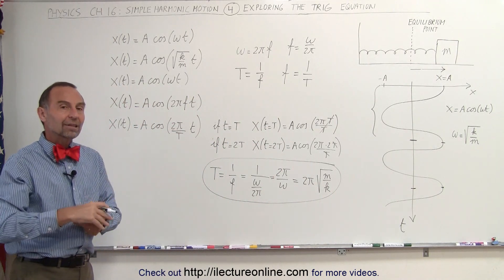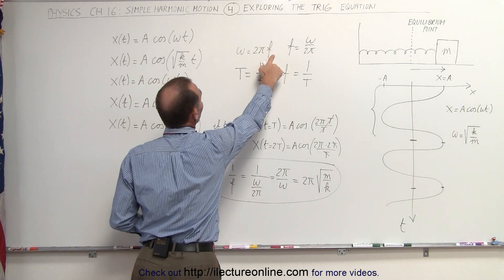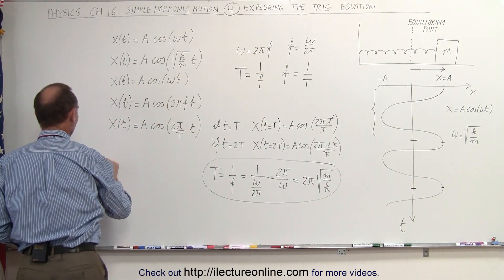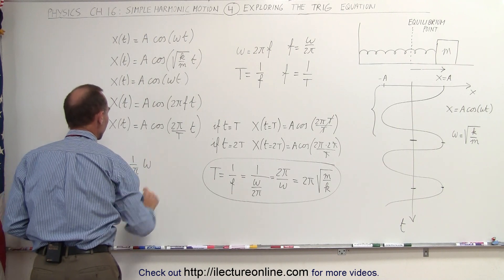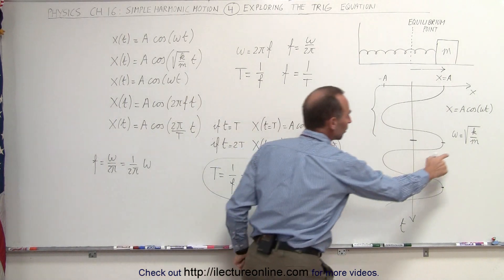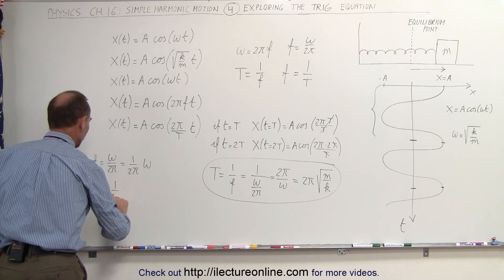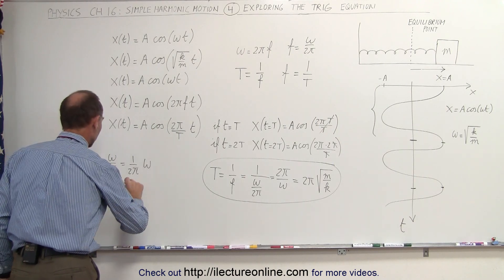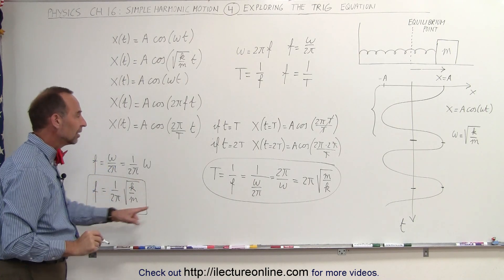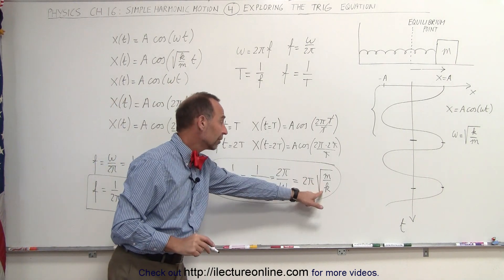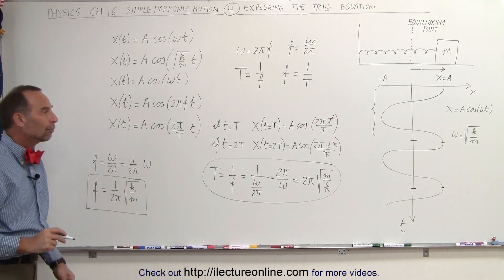To find the actual frequency — the number of oscillations per second — we use f equals omega divided by 2 pi, which can be written as 1 over 2 pi times omega. Since omega equals the square root of k over m, the frequency equals 1 over 2 pi times the square root of k over m. So the period is 2 pi times the square root of m over k, and the frequency is 1 over 2 pi times the square root of k over m.